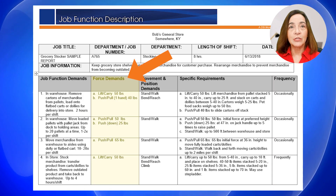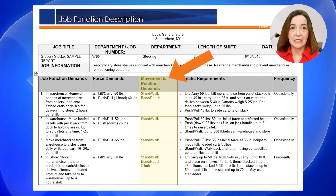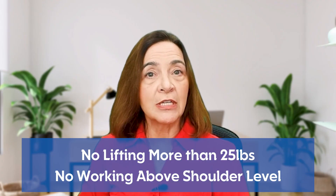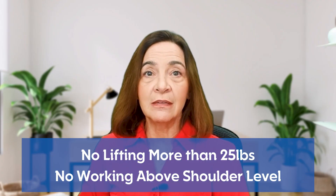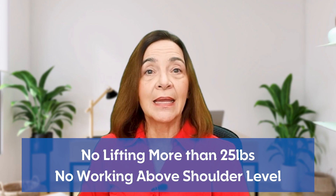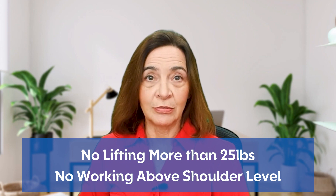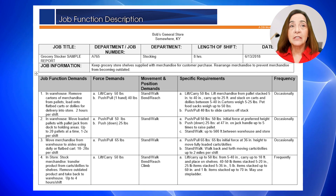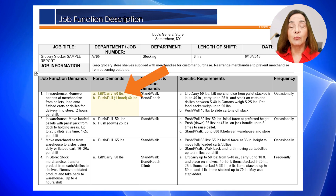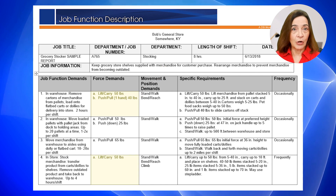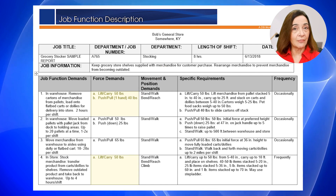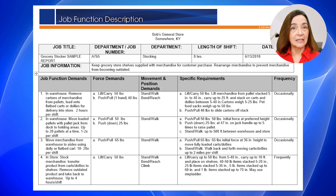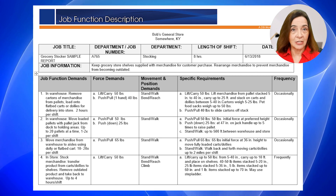We've broken the physical demands into force demands and movement and position demands. Remember, our restriction is no lifting over 25 pounds and no work above the shoulder level. On first glance, job function demands number one and four both involve lifting over 25 pounds, so they're not easily accommodated to this restriction.